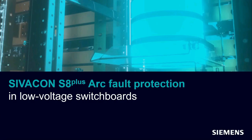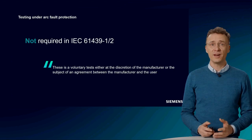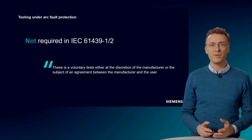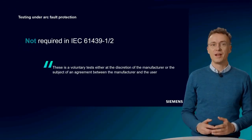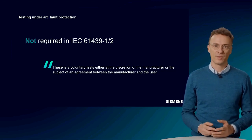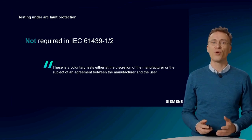Low-Voltage Switchboards are produced in accordance with IEC 61439-2. This regulates topics such as degree of protection, internal separation, and design verification. However, the behavior in the event of an arc fault is explicitly not covered by this standard. The requirements for arc fault behavior are regulated in a technical report, which is not part of IEC 61439-2.